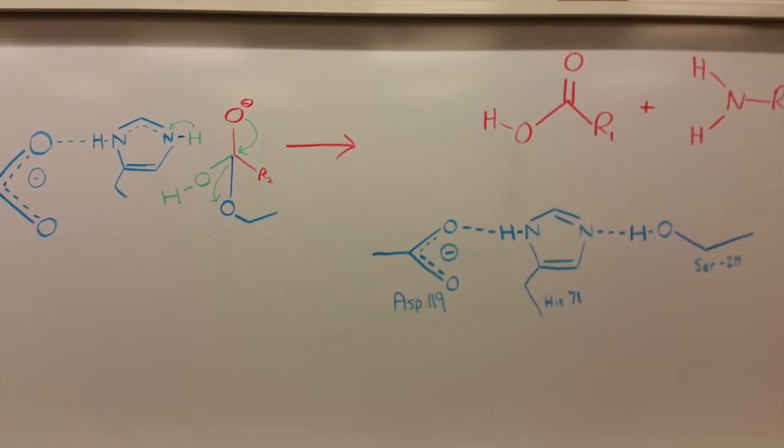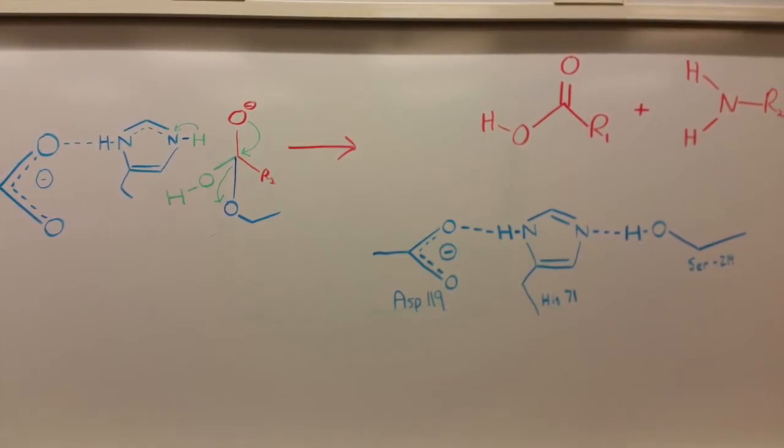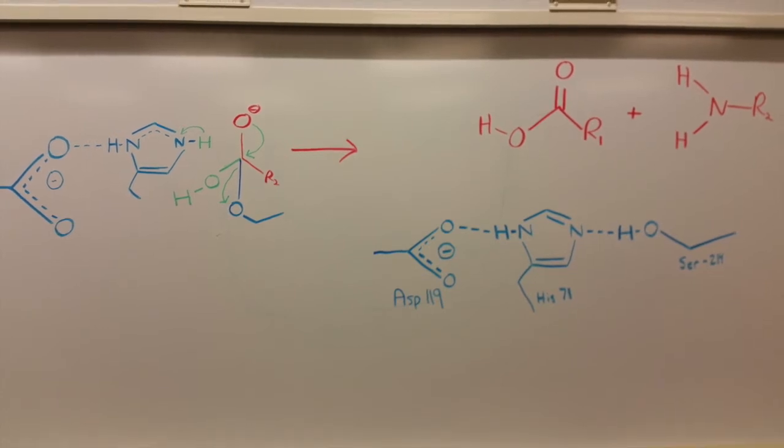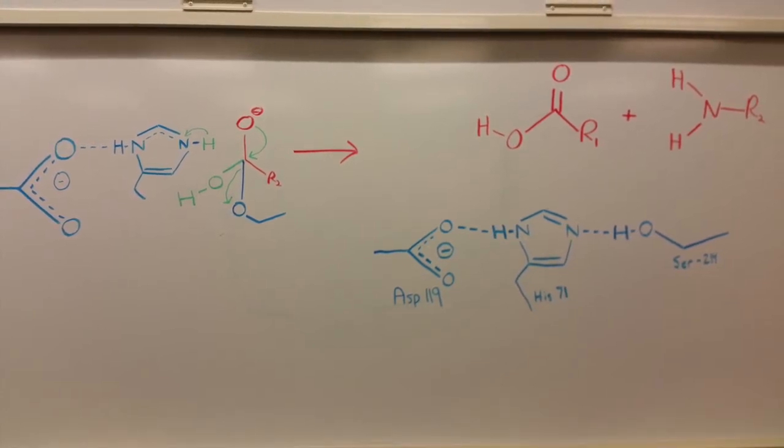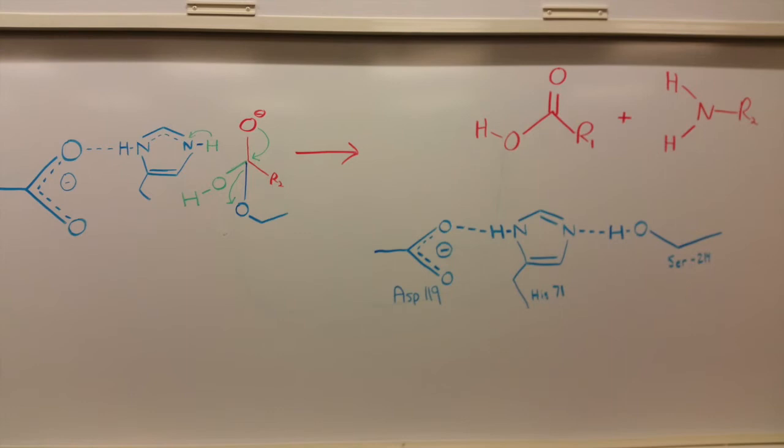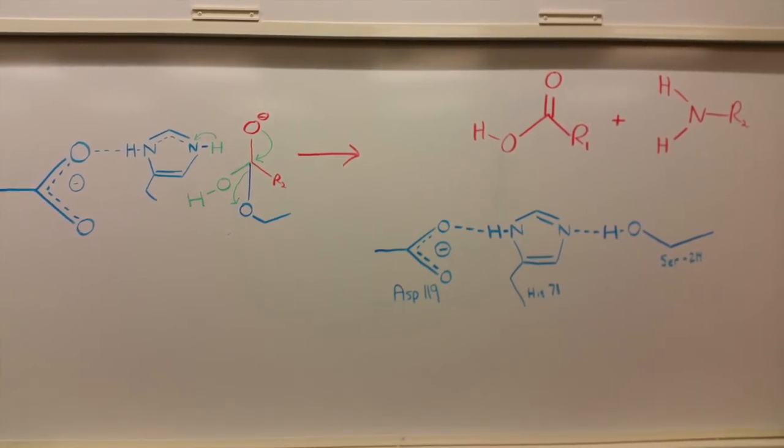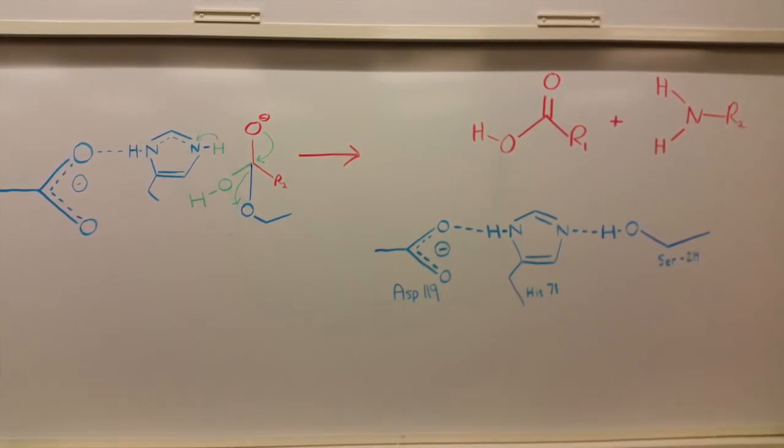This tetrahedral also collapses due to resonance, creating the second product. Overall, the reaction creates two products, an amine and a carboxylic acid, and regenerates the enzyme's active site.